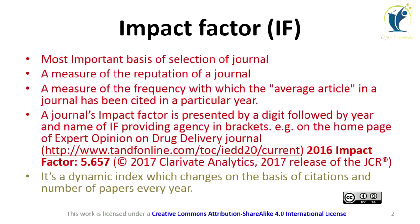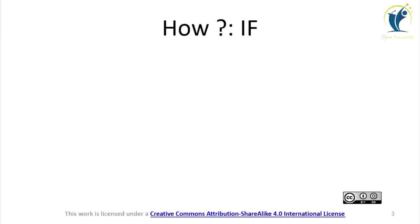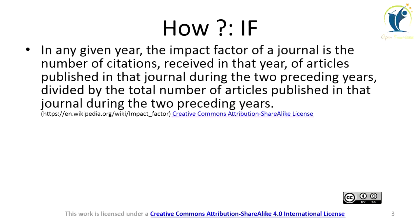It is a dynamic index which changes on the basis of citations and number of papers every year. In any given year, the impact factor of a journal is the number of citations received in that year of articles published in that journal during the two preceding years, divided by the total number of articles published in that journal during those two preceding years.